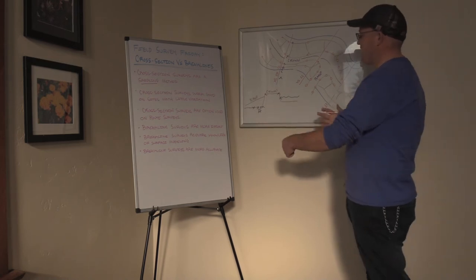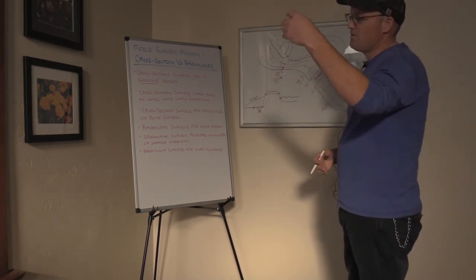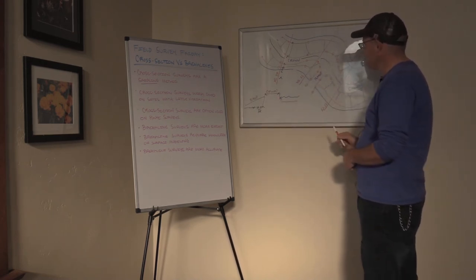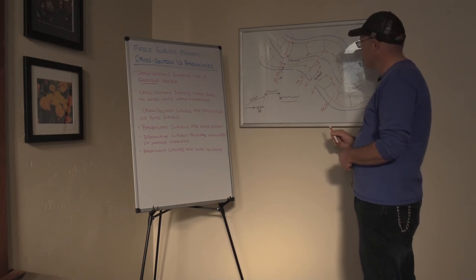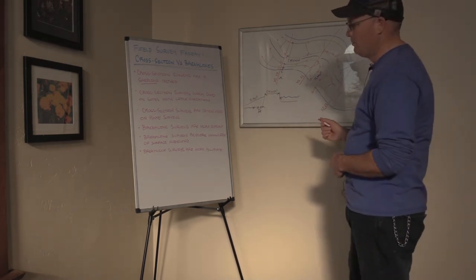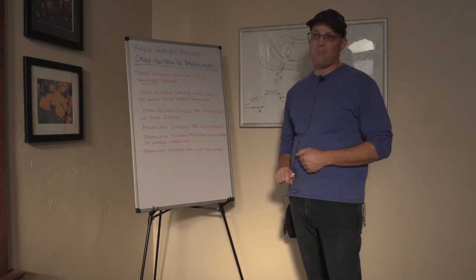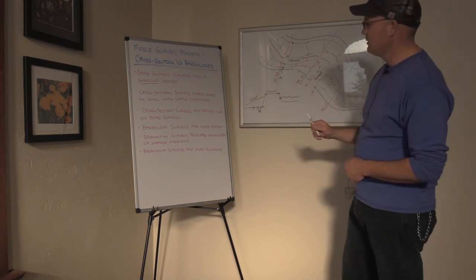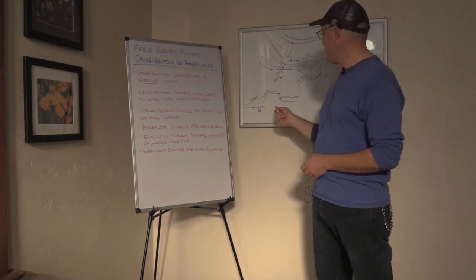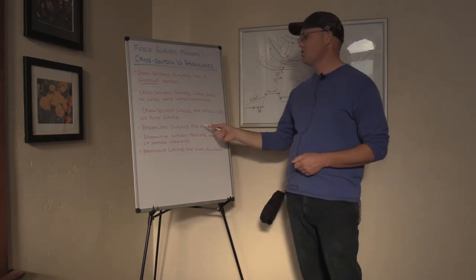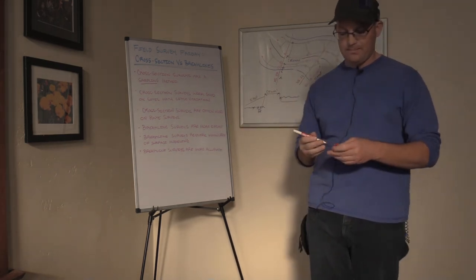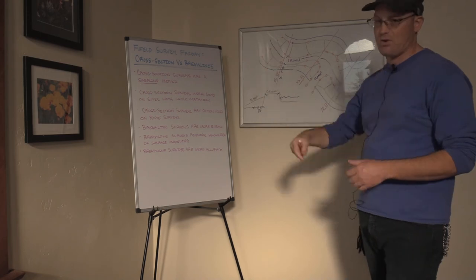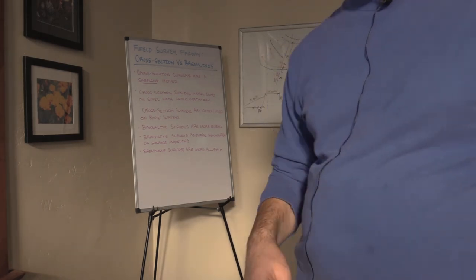So on brake line surveys, you're capturing angle points, beginning curves, ends of curves, highs, lows, key features, grade breaks. So you get a lot more detail with that method. Now, what's the downside? It takes a lot more effort. It's a lot more work. There's a lot more shots here with a brake line survey than there would be with a cross section survey. And you got to know something about how you would draw this stuff in CAD to do a good job in the field. And that takes time to learn that. So it takes more experience and more knowledge to run a good brake line survey than it does a cross section survey.